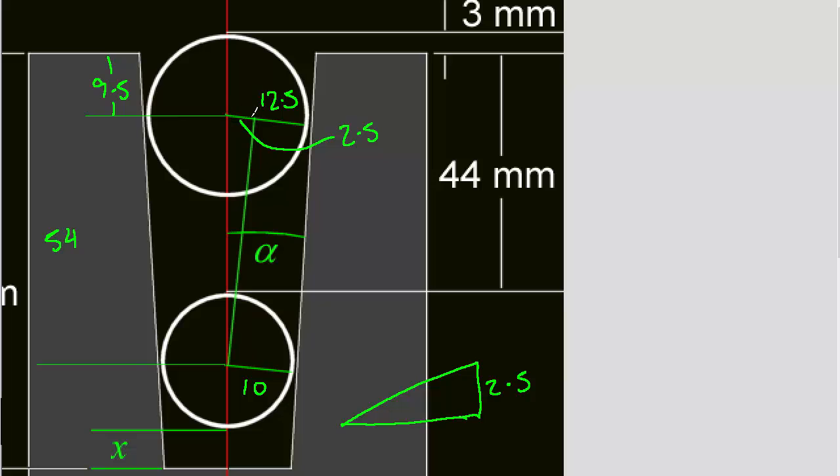So we've now got a triangle that's 2.5 on this edge here, which is 2.5 there. And then we've got this distance here, which is the hypotenuse. Remember, these are where the right angles are, where the balls touch the side of the taper.